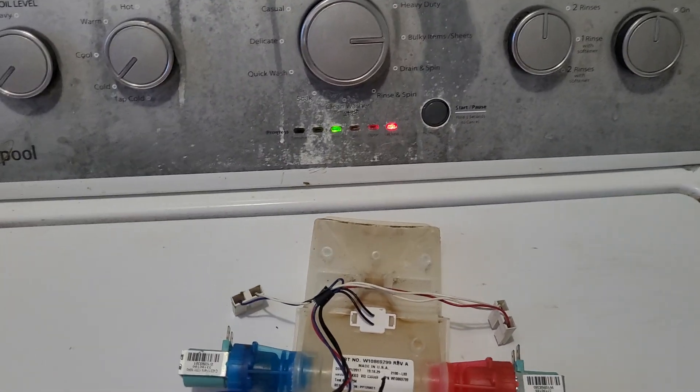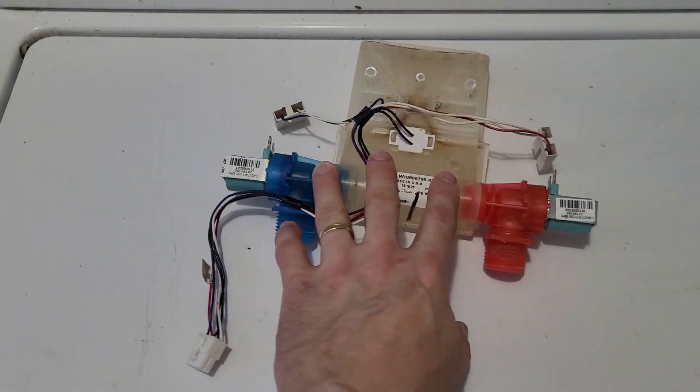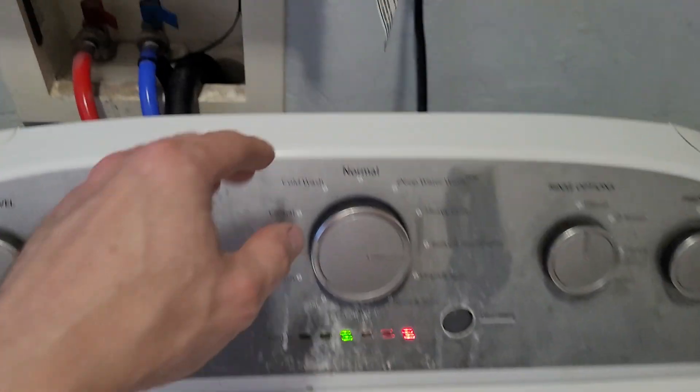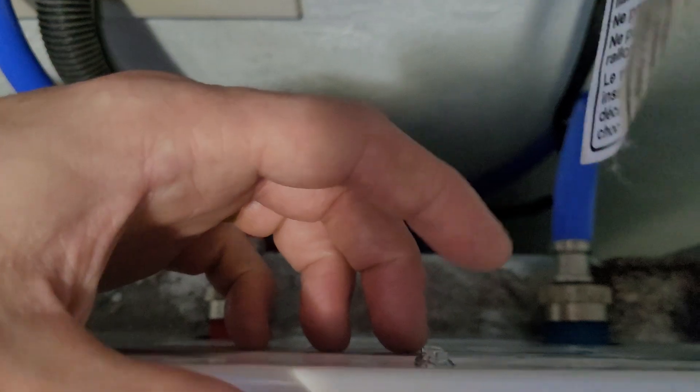So what I figured out was this water inlet part here. You have two solenoids. When you gain access to it by taking this screw out here in the middle, and then there's one over here and one on this side to get this to pull out so you can access the bottom of it.